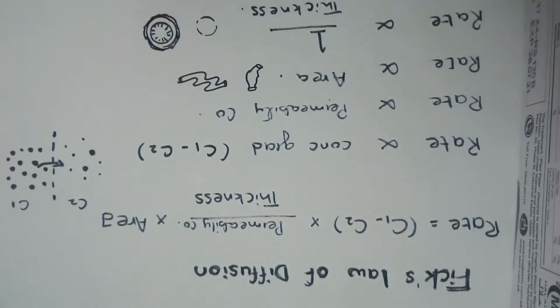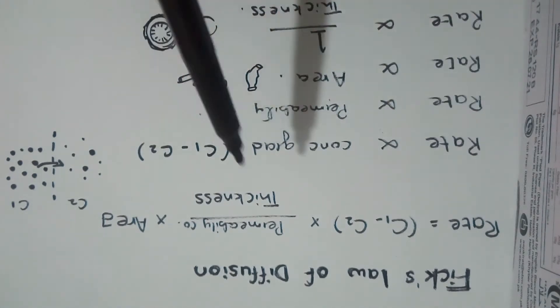For example, the lungs versus those which have thick membranes like the intestine or the skin. So all in all, when we put these equations in the formula, we see here that the rate is directly proportional to concentration gradient, permeability coefficient, area, and inversely proportional to the thickness.